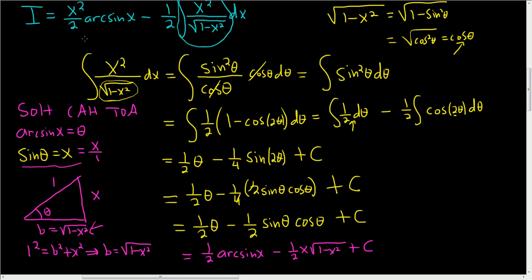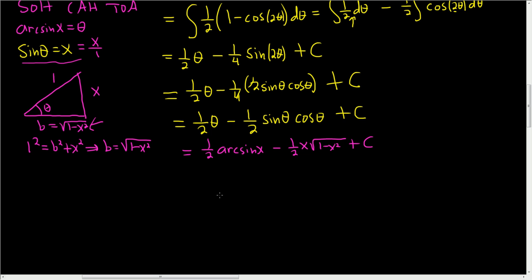Is that the answer? No way, right? We still have this piece up here, right? So it's this piece minus 1 half times what we just worked out. So let me write it again. So i is equal to x squared over 2 arc sine x.